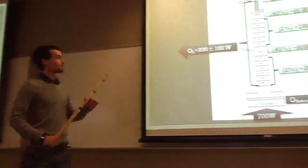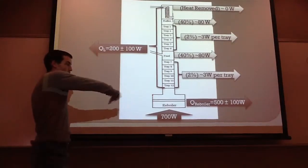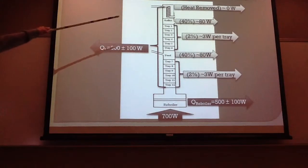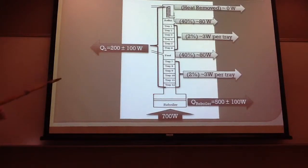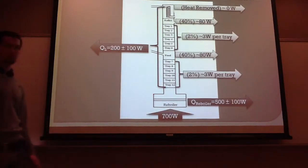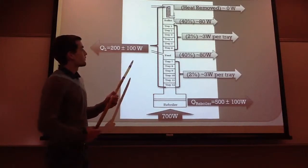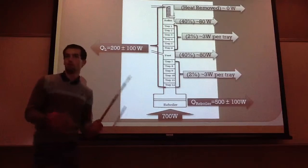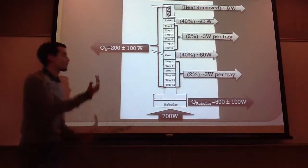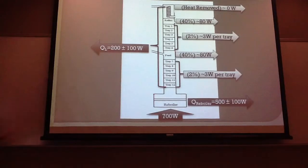This is a schematic of the whole column. At 700 watts input, the reboiler always loses 500 ± 100 watts. The heat removed by the condenser at 700 watts was negligible — zero watts. The heat loss from the entire column therefore must be 200 ± 100 watts. Using percentage estimates from Dr. Henry on which parts of the column lose the most heat: the insulated sections lose about 40 watts each, each tray loses about 3 watts per tray, and the reflux and feed lines both lose about 40 watts each.